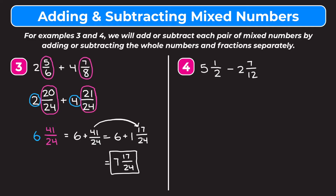Let's take a look at example 4 which is a subtraction problem. Example 4 is 5 and a half minus 2 and 7 twelfths. We're going to use the same method we did for example 3 — keeping the whole number parts the same. We're going to keep this as a 5 and keep this as a 2. We want to make a common denominator between our 1 half and our 7 twelfths. The least common multiple of 2 and 12 is 12.